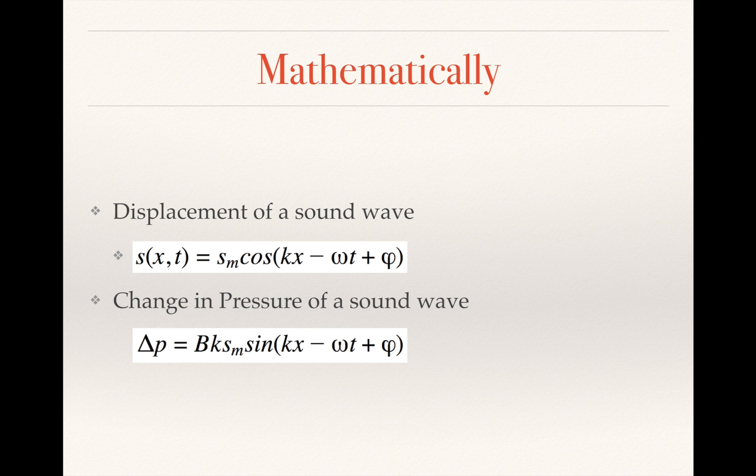So taking a look at these two mathematically, we see that our displacement is shown as a cosine function: s(x,t) = sm*cos(kx - ωt + φ), where on the other hand, our pressure, or change in pressure, is shown as a sine function: Δp = Bksm*sin(kx - ωt + φ). Something else to note is right here we have our amplitudes, and here we have the phases of the two functions.